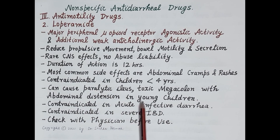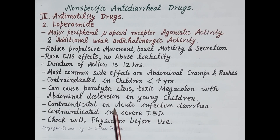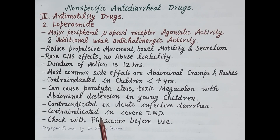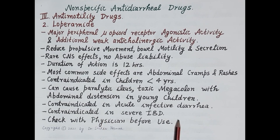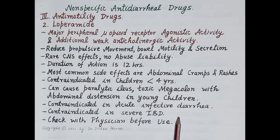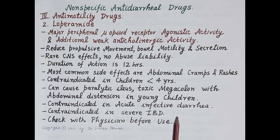Loperamide is contraindicated in children less than 4 years as it can cause paralytic ileus and toxic megacolon with abdominal distension. It is contraindicated in acute infective diarrhea. It can be used carefully in mild inflammatory bowel disease but is completely contraindicated in severe inflammatory bowel disease. For complete information on non-specific antidiarrheal drugs, refer to the video on antidiarrheals part 5.